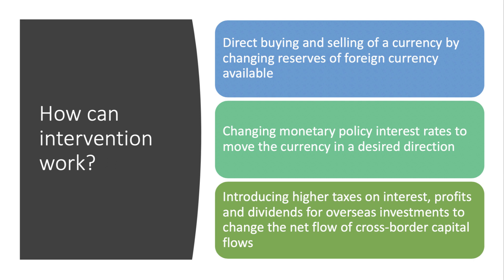How can intervention work? What tools are available for central banks? The first option is direct buying and selling of a currency by changing reserves of foreign currencies. To manage a floating currency, the central bank needs enough foreign currency reserves available should it need to intervene. A second tool is to change interest rates — monetary policy can be tilted to achieve a desired change in the exchange rate, because interest rate changes affect flows of hot money across international financial markets.